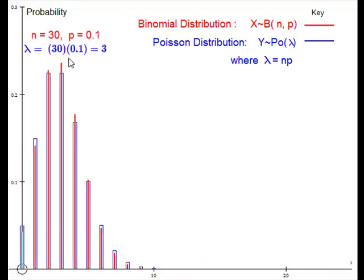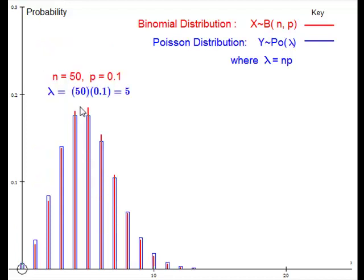Much better. A reasonably good similarity. Now keeping p fixed at 0.1, what I am going to do now is just change n to 50. Better still.